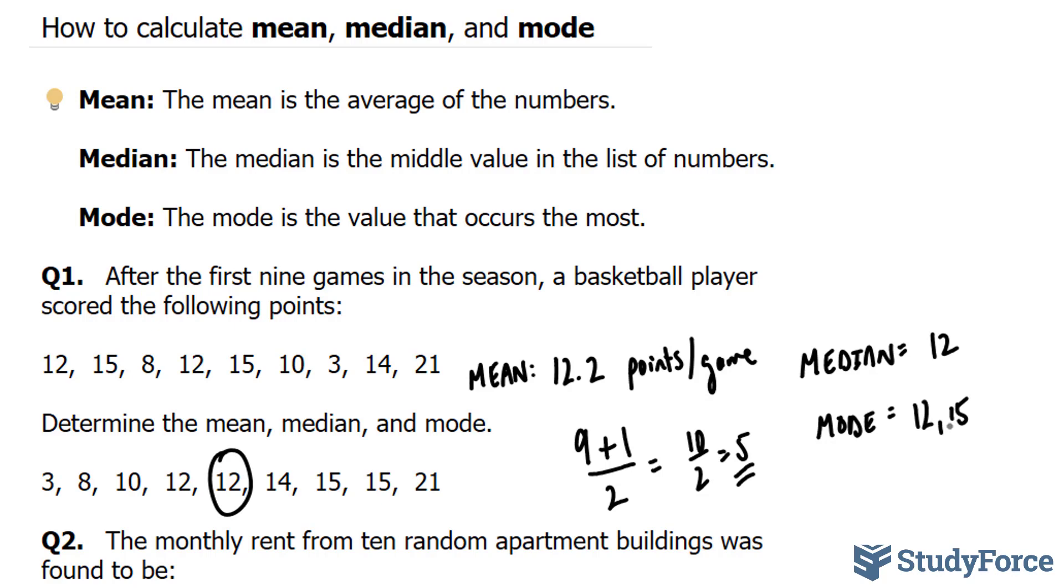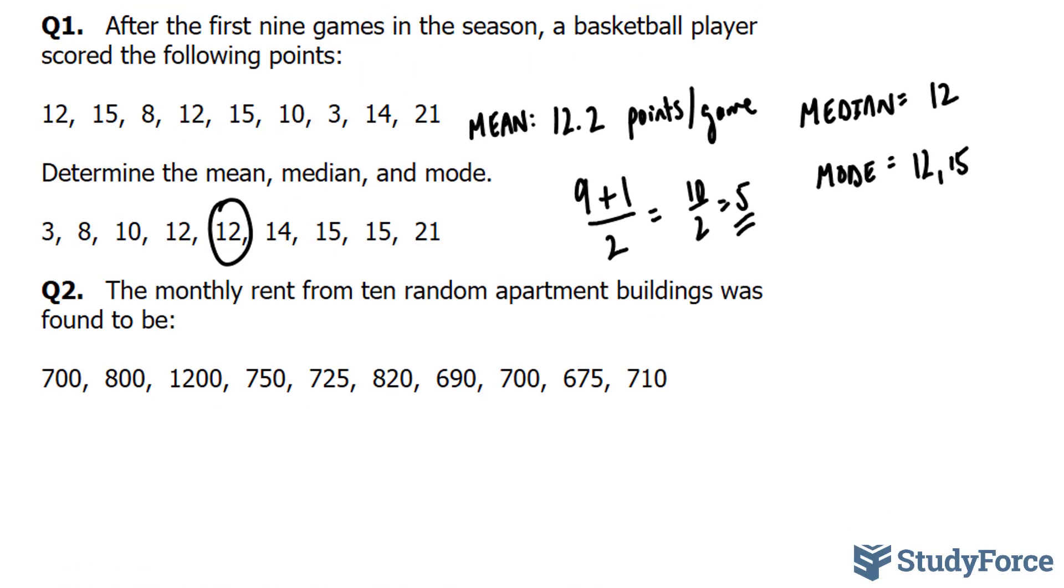Now that we know what to do, let's move on to question 2. In question 2, we're told, the monthly rent for 10 random apartments was found to be the following. Determine the mean, median, and mode.